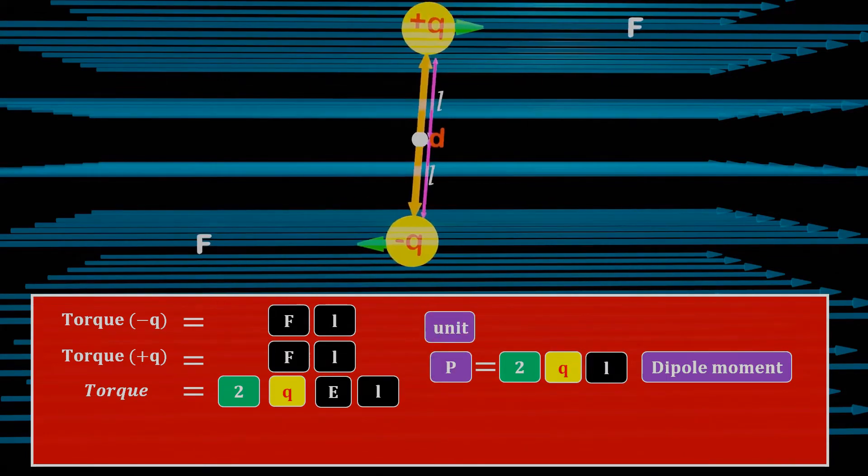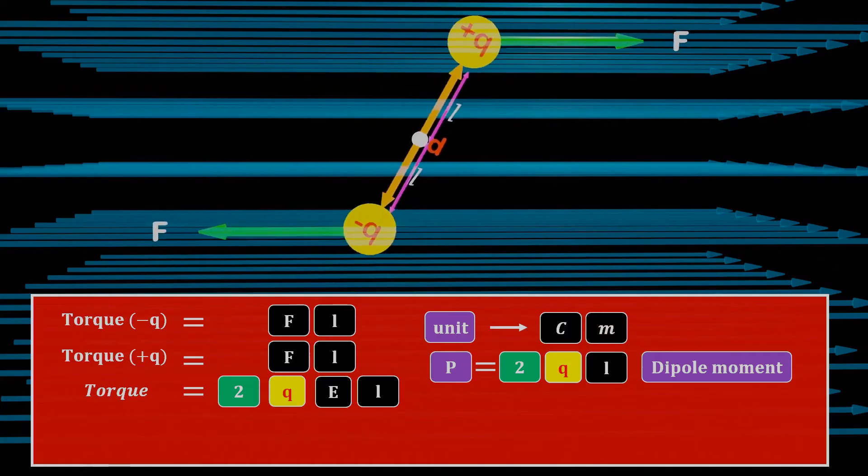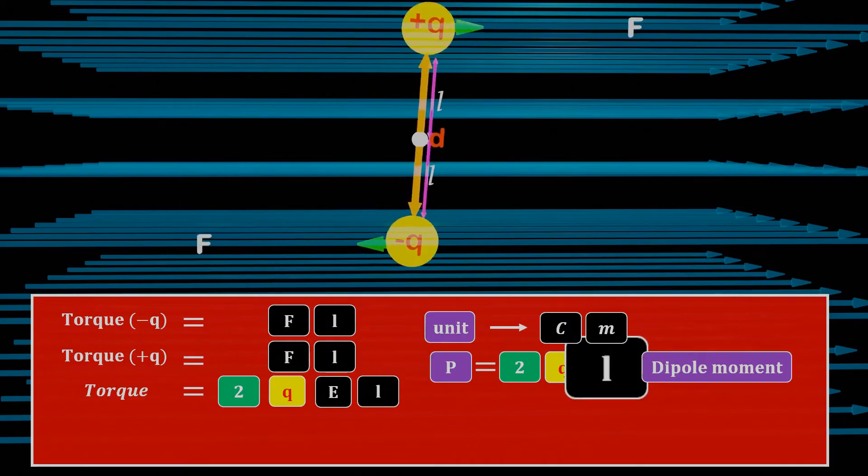In terms of units, the dipole moment equation consists of a charge Q in coulombs and the length in meters, resulting in the unit of the dipole moment being coulomb meter. In this term, we can see that the dipole moment depends on the magnitude of the charges and the length L from the center of rotation.